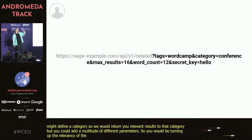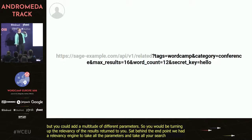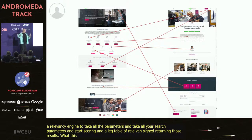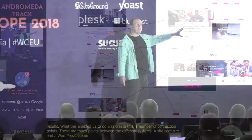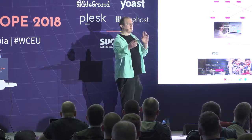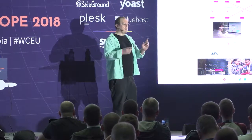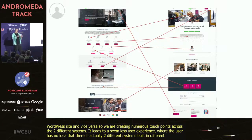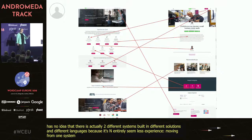Sat behind this endpoint was what we called a relevancy engine — taking all your search parameters, scoring them, and essentially creating a league table of relevancy before returning results. This enabled us to create numerous connection points — touch points between the Sitecore site on the left and the WordPress site on the right. Sitecore might be showing content generated by WordPress and vice versa, leading to a seamless user experience where the user has no idea there are two different systems built in completely different solutions, because it's an entirely seamless experience.